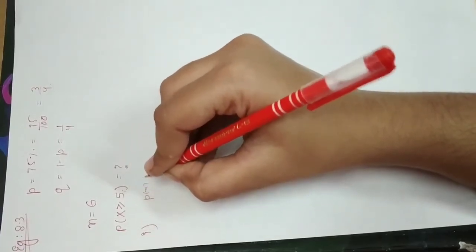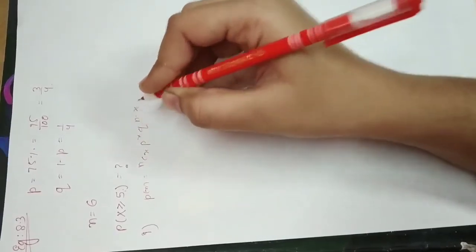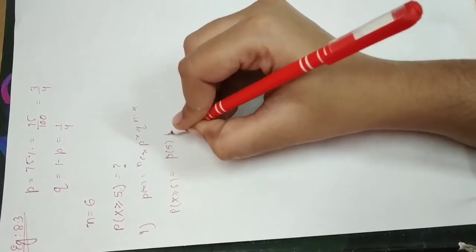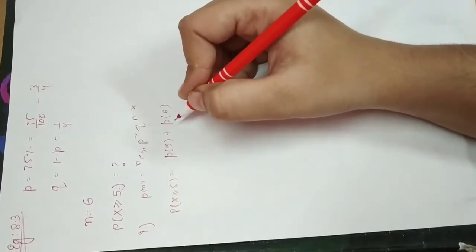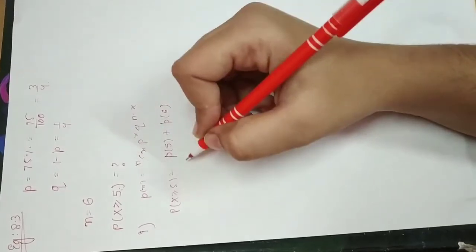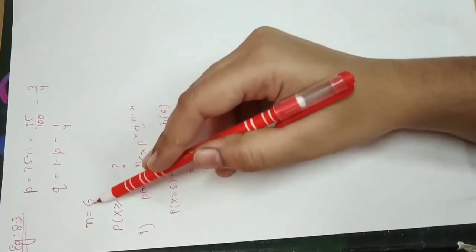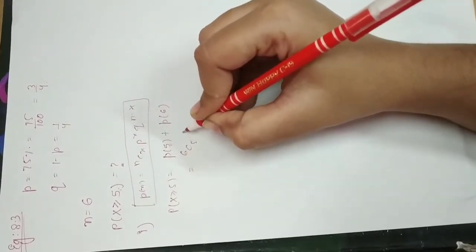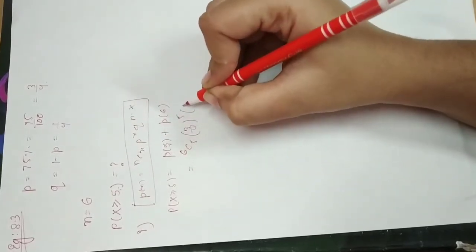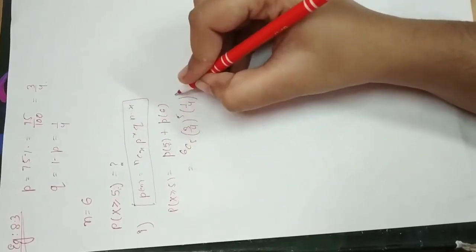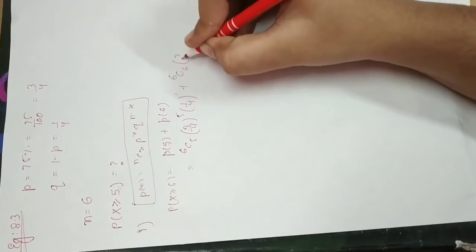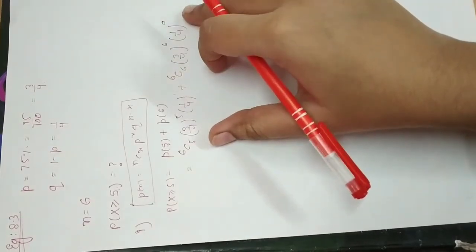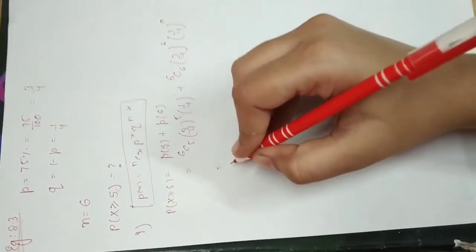You will know what is the PDF of binomial distribution: nCx, p to the power x, and q to the power n minus x. Here we have probability X is greater than or equal to 5. First probability will be 5 and then probability will be 6. We know that only our 6 cups are there, and then we have to identify 5 or more. Here we have n value 6 and x value 5. So here we have 6C5, 3 by 4 to the power 5, and 1 by 4 to the power 1, then it will be 6C6, 3 by 4 to the power 6, and 1 by 4 to the power 0. When we solve this, what will be our answer? It will be 0.534.